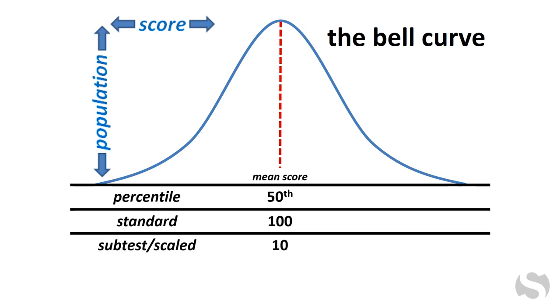Subtest or scaled scores range from 1 to 19, with 10 being the mean. For T scores, 50 represents average performance.